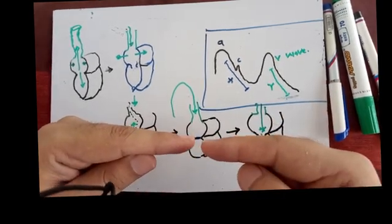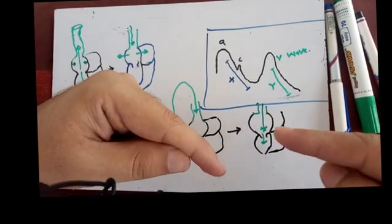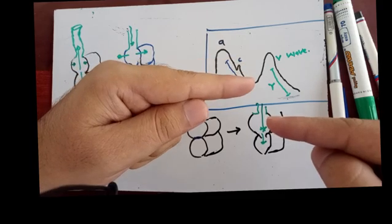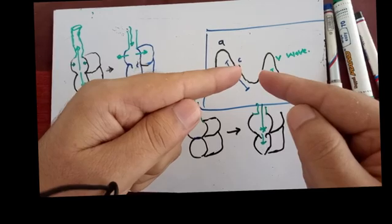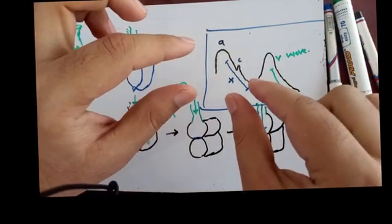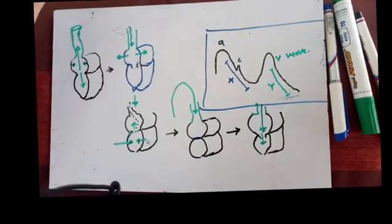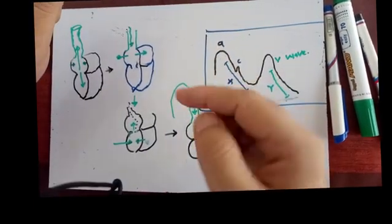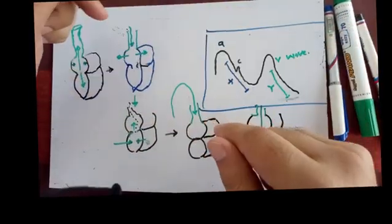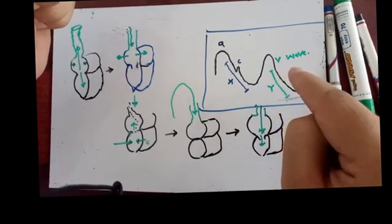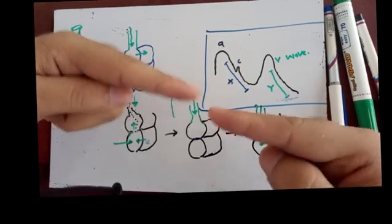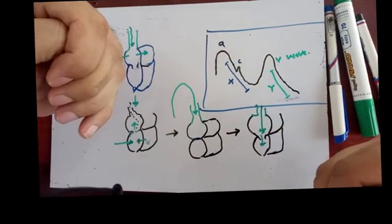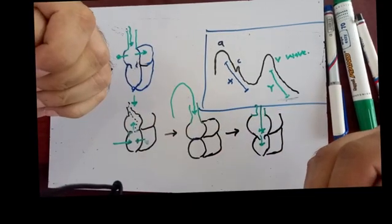The y descent occurs when the tricuspid valve opens. Blood from the right atrium rushes down into the right ventricle, the right atrium empties, blood from the jugular system drains down, and jugular vein pressure falls — producing the y descent. Summary: a wave = atrial contraction, x descent = atrial relaxation, c wave = tricuspid valve bulging into right atrium, v wave = venous return against closed wall, y descent = tricuspid valve opening and right ventricular filling.